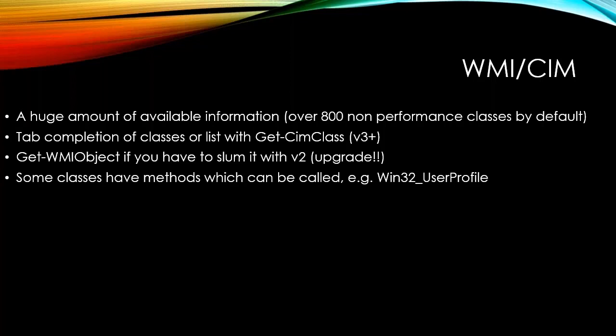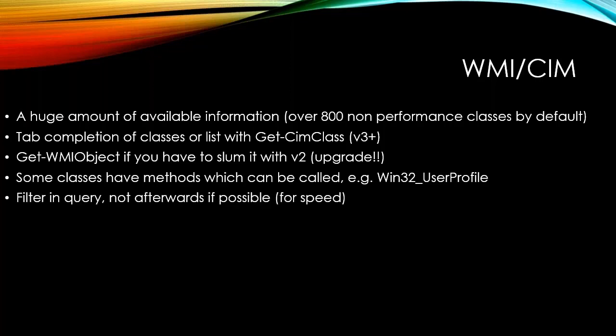Some classes have methods that can be called. For example, Win32_UserProfile gives you local profiles on a server. I have scripts on GitHub that show profile sizes and allow you to remove ones you don't need — removing them simply by calling a method on that profile rather than figuring out where files are. When filtering — and this is true for AD queries as well as CIM queries — we try to filter as far left as possible: retrieve as small an amount of data as possible rather than filtering later. If you have a million AD records, don't fetch them all back and then filter.